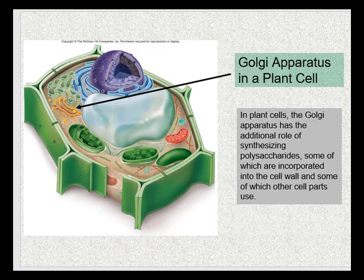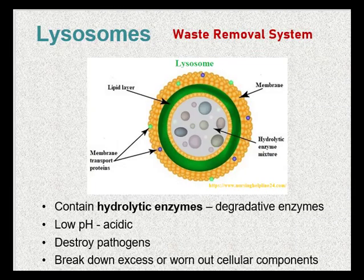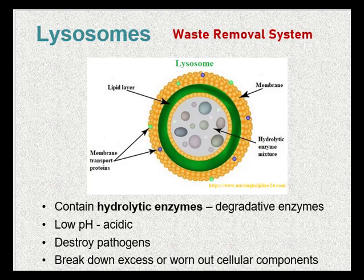The Golgi apparatus in plant cells has an additional role — it is responsible for synthesizing polysaccharides, some of which will be incorporated into the cell wall. Lysosomes are small, round organelles that contain hydrolytic enzymes — degradative enzymes designed to destroy pathogens and break down excess or worn-out cellular components. In other words, lysosomes are the waste removal system of the cell. These hydrolytic enzymes have a much lower pH than the cytoplasm, making them more acidic and able to break down extra components.